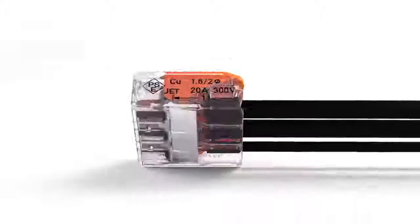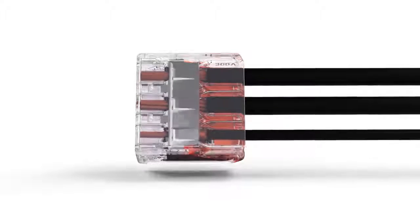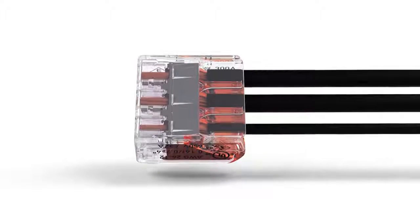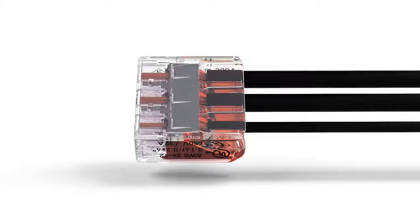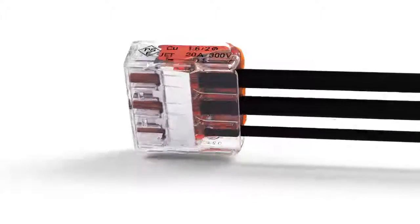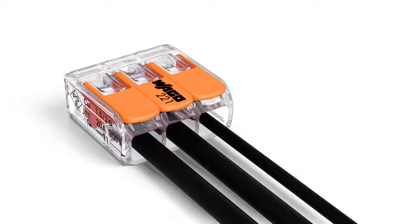The transparent housing enables visual inspection of the correct conductor position, providing a clear view of conductors that have not been inserted far enough or that have not been stripped to the proper length. A gas-tight contact point provides a durable and secure connection between conductor and current bar.